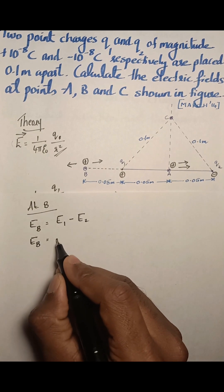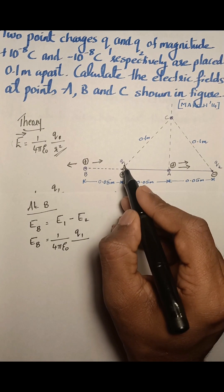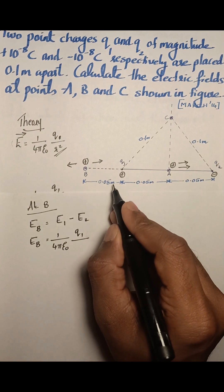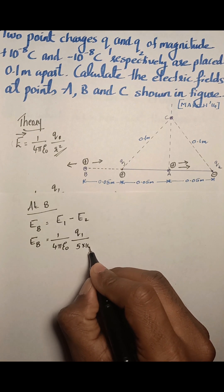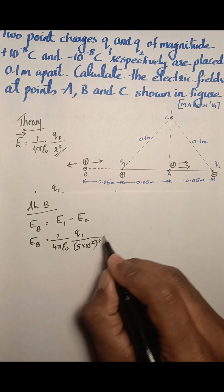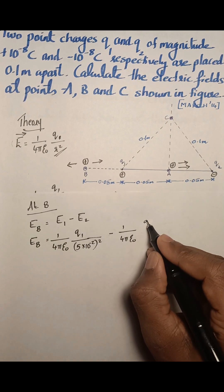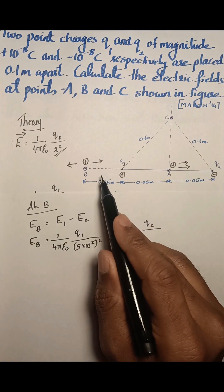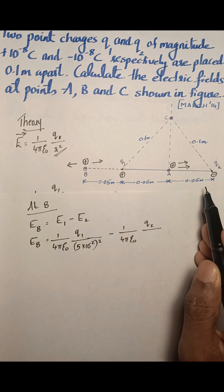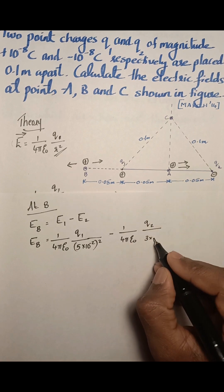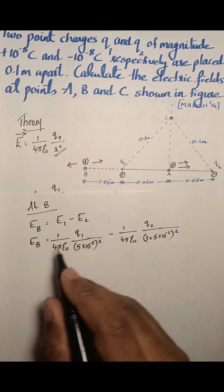Substituting values, the electric field at B equals (1/4πε₀) × Q1 / (5×10⁻²)² minus (1/4πε₀) × Q2 / r2². The distance between Q1 and B is 0.05 meter, written as 5×10⁻². The distance between Q2 and point B is 0.05 + 0.05 + 0.05 + 0.05, which is 3 times 0.05, written as 3 × 5×10⁻². So we solve this equation.